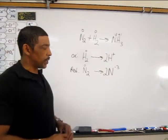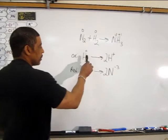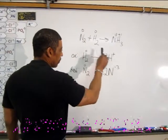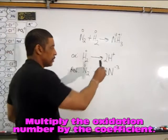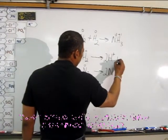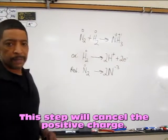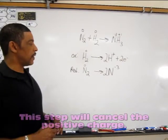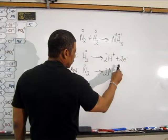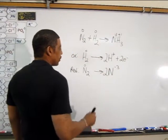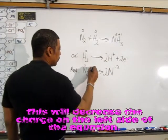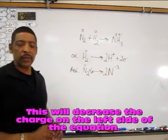Now that the mass is balanced, the charge must be balanced. In the oxidation half reaction, on the left side the total charge is zero, whereas on the right side the total charge is plus two — two times plus one. So to balance the charge, simply add two electrons to the right side. In the case of nitrogen, on the left side the total charge is zero; on the right side, the total charge is minus six. So to balance the electrons in the reduction half reaction, place six electrons on the left side.